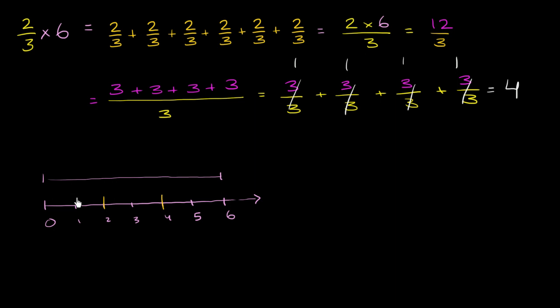And we want 2 of those thirds. So we want 1 third and 2 thirds. Now where does that get us? That gets us to 4.